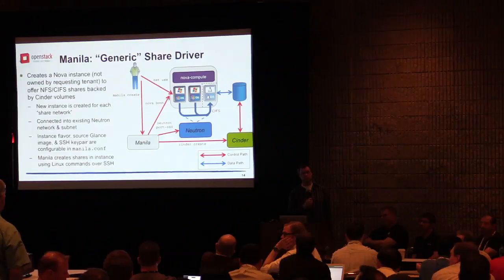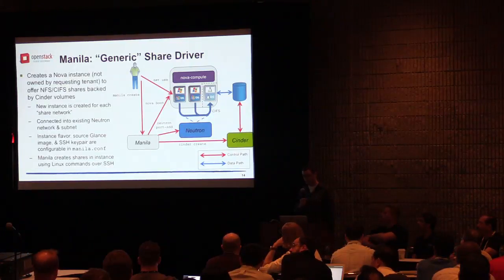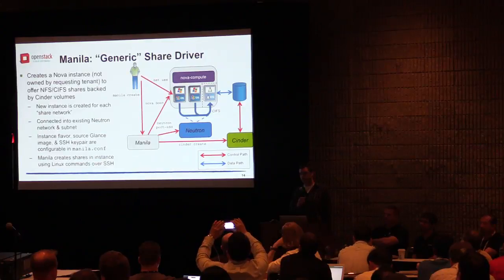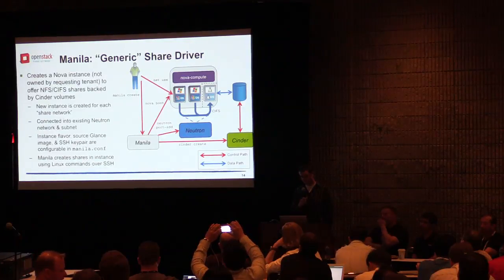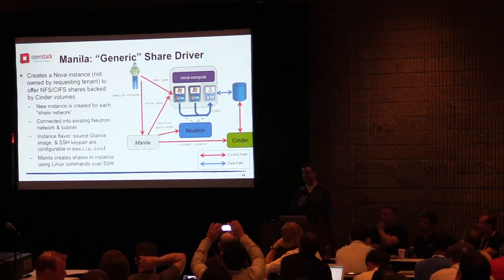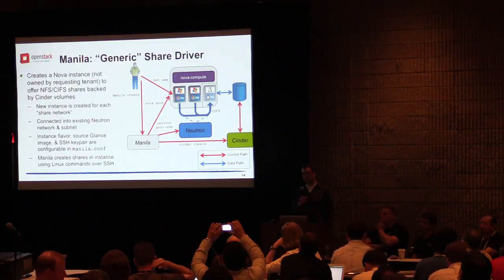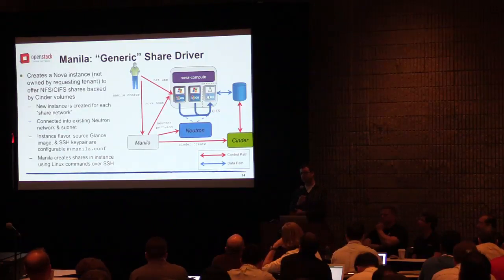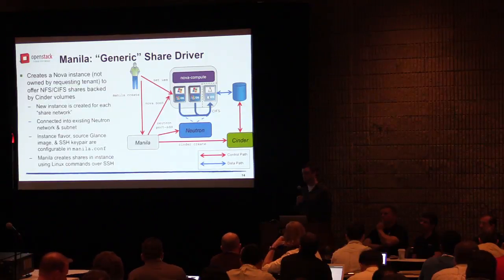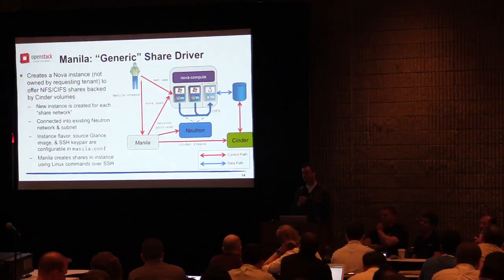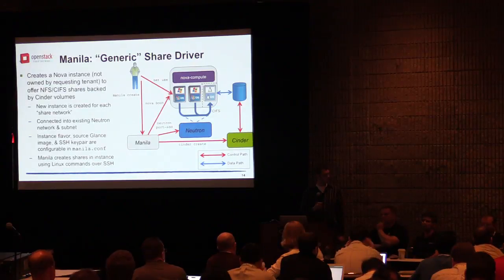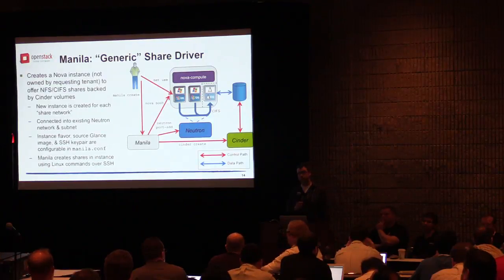Question: You said something about using Samba or SMB — how does that work? Manila's goal is to support all shared file systems. The two most well-known are NFS and CIFS/Samba/SMB. There are other shared file systems like CephFS, GlusterFS, and GPFS that we intend to support. Not all individual backends will support all of them — for example, the NetApp backend won't support GlusterFS. Right now, the generic backend only supports CIFS and NFS. The generic driver will spin up NFSD or the Samba daemon within that Nova instance based on the protocol choice made by the client.